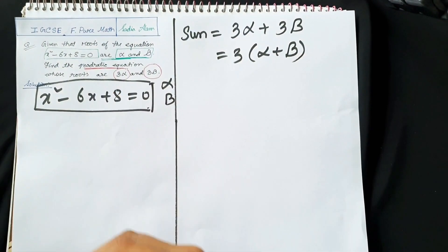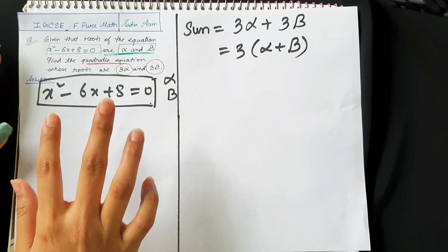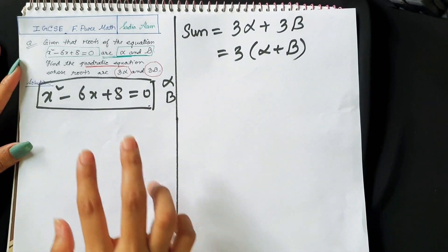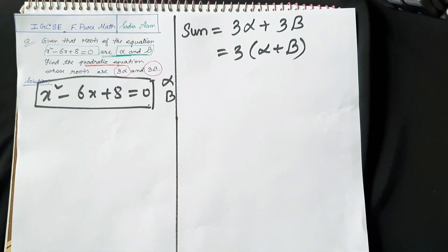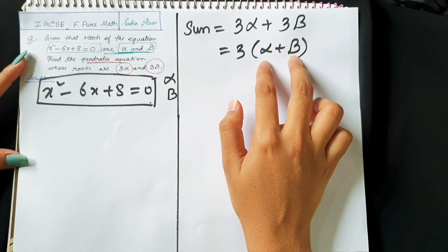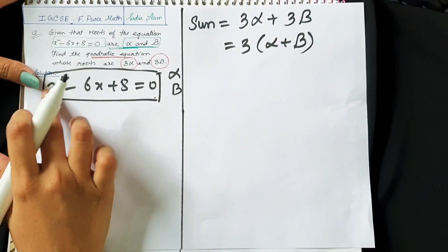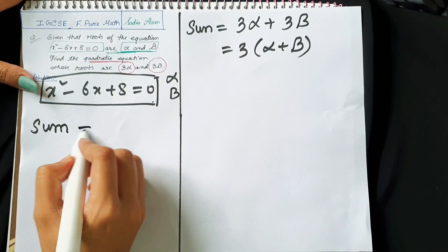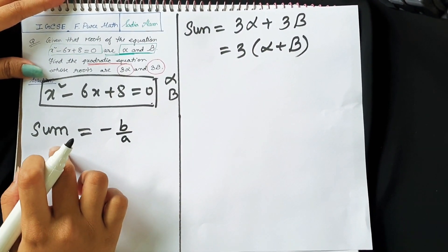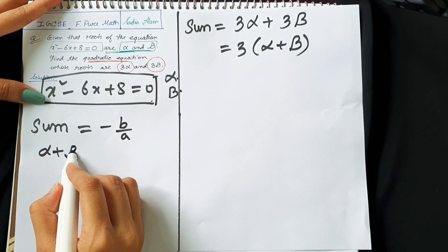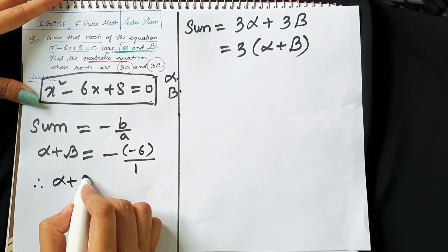For a different quadratic equation, the roots will be different. We are given one equation whose roots are alpha and beta, and we need to find a different quadratic equation with roots 3α and 3β. To find this new equation, we use the given equation. The sum of the roots — alpha plus beta — equals minus b by a. Here b is minus 6 and a is 1, so alpha plus beta equals 6. Similarly, the product alpha times beta equals c by a, which is 8 divided by 1, so alpha times beta equals 8.